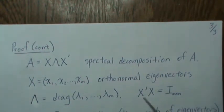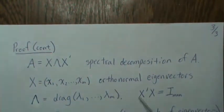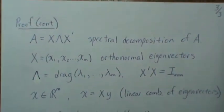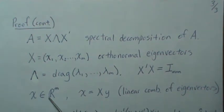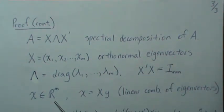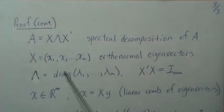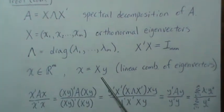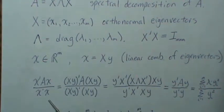And because these are orthonormal, that means that this relationship has to be the identity matrix. So let x be an element of R^m, and then that means that x can be represented as a linear combination of these eigenvectors. That's just by definition, so now let's look at this relationship here.